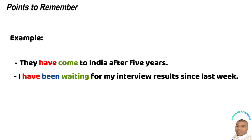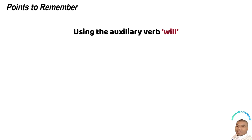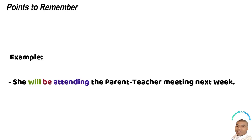The last point to remember is when using the auxiliary verb 'will' to denote simple future tense. For example: 'She will be attending a parent-teacher meeting next week.' Here we have the auxiliary verbs 'will' and 'be', and the main verb 'attend' is in the '-ing' form. This is the future continuous tense.